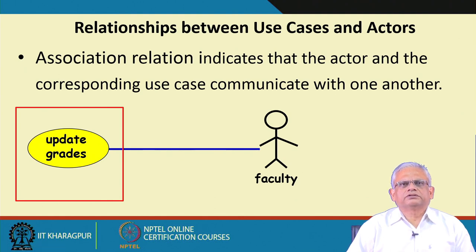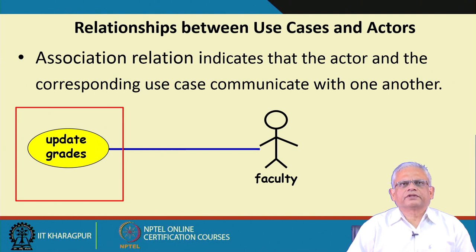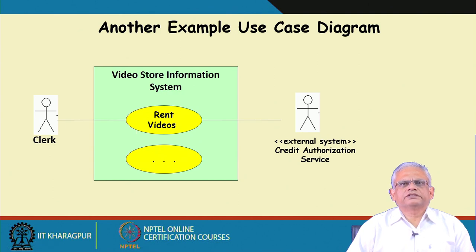Here is another example of a use case diagram. The name of the software is Video Store Information System. One of the functionalities — the use case — is 'rent videos.' The clerk is authorized to rent videos, so a customer chooses a video and gives it to the clerk, and the clerk issues the video through the system.